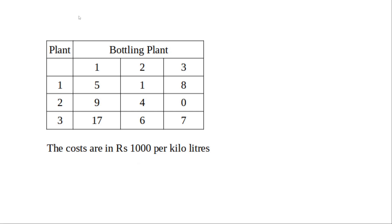The cost of supplying milk to the bottling plants is given in the table. Supplying milk from plant number one to bottling plant number one is going to cost 5,000 rupees per kilolitre. Supplying from plant number two to bottling plant number two is going to cost 4,000 rupees per kilolitre.